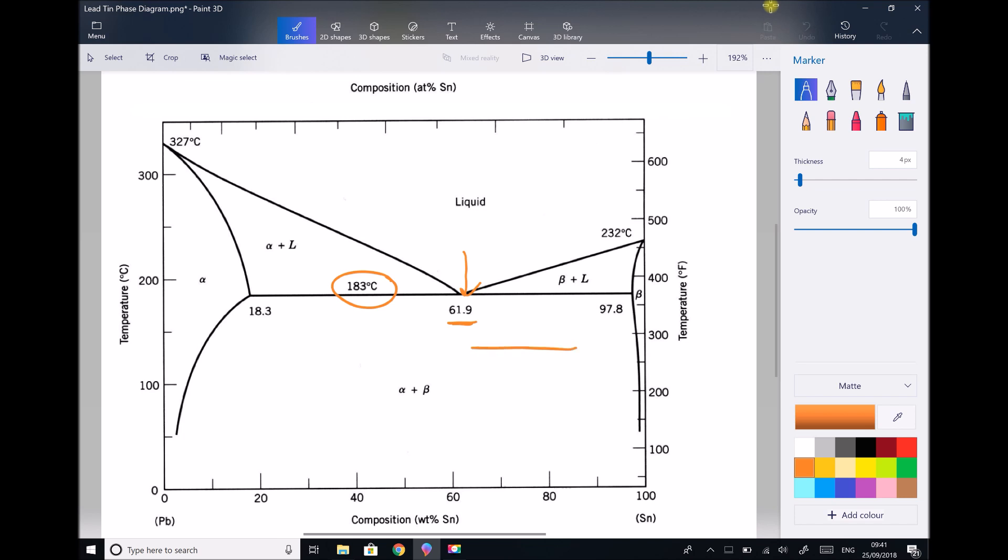As we mentioned before the appearance of that would be layers of alpha and beta. Repeating units. Our alpha layers when that's all turned to solid will be primarily lead. Recall that we said alpha was lead rich but it would still contain a small amount of tin. And our beta layers would be primarily tin but they would still contain a very small amount of lead. In this case 2.2% would still be lead dissolved within the tin.